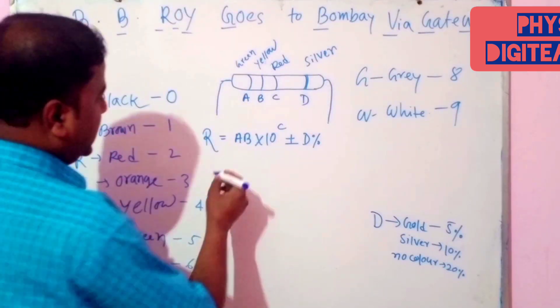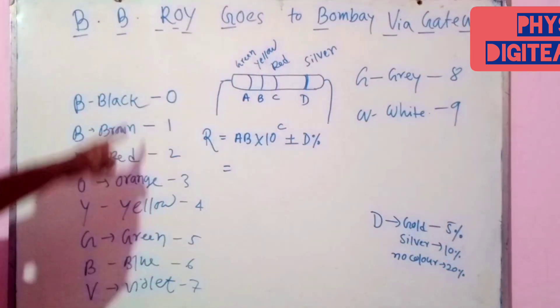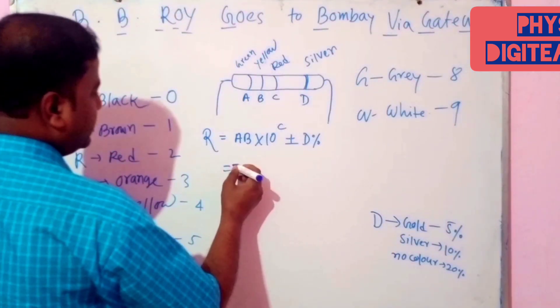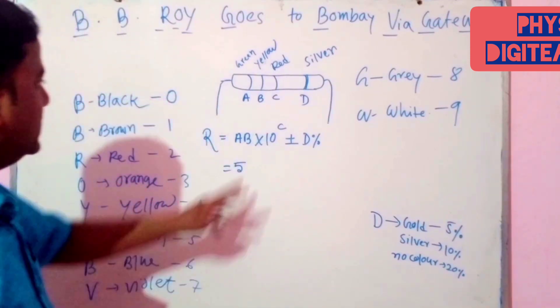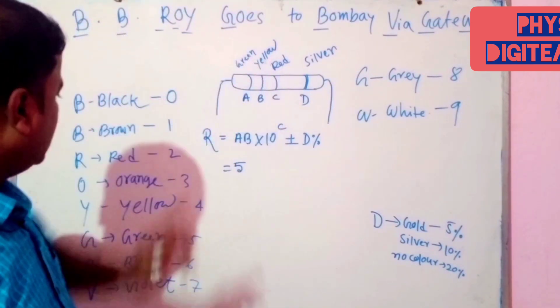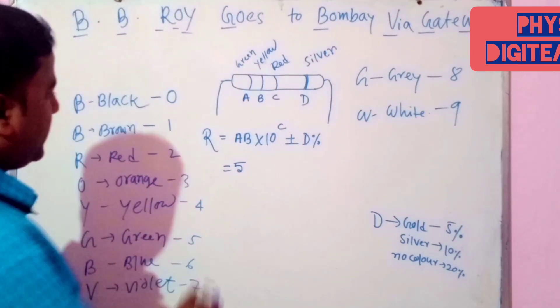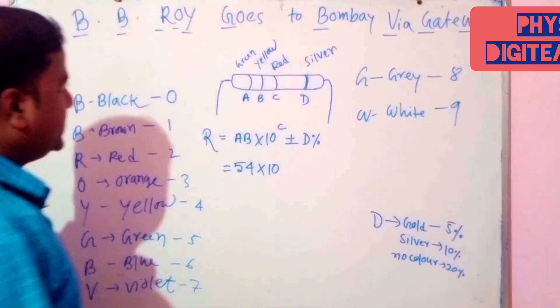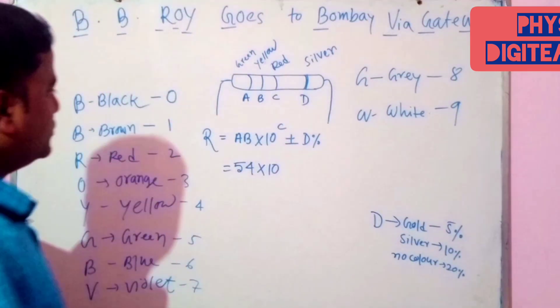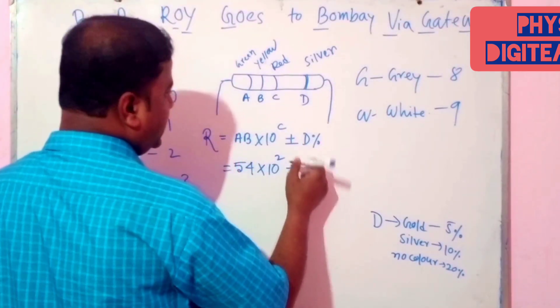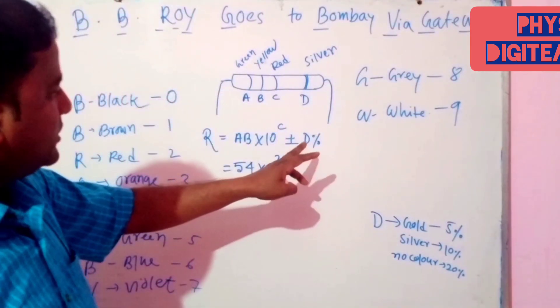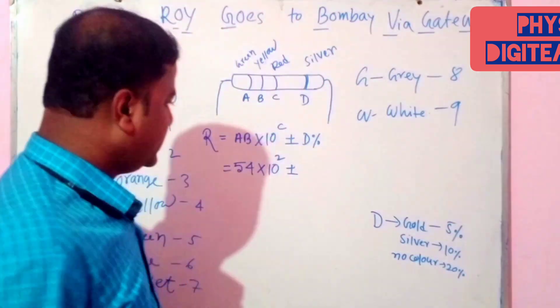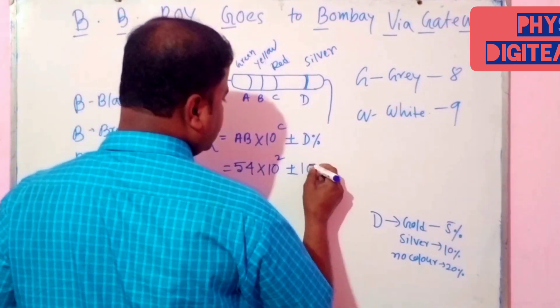First, A, here, A is green. Then, what is the code value of green? This is green, this is 5. Next, B, second color, yellow. The code number of yellow is 4. 10 to the power C, third color red, and this is 2. Plus minus D. This is fourth band, here, silver. For silver, the tolerance is 10%. This is 10%.